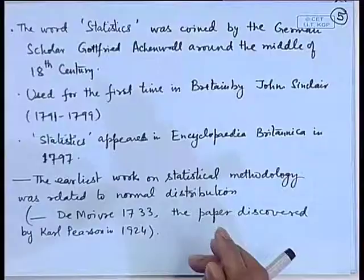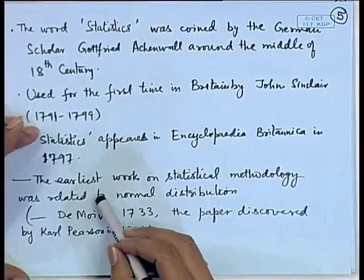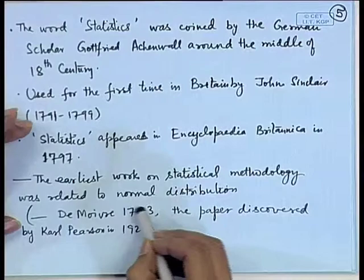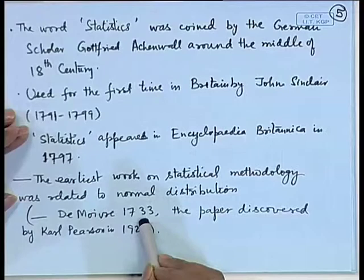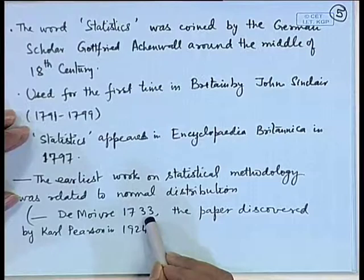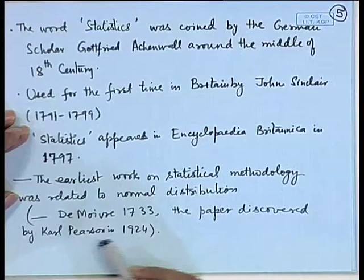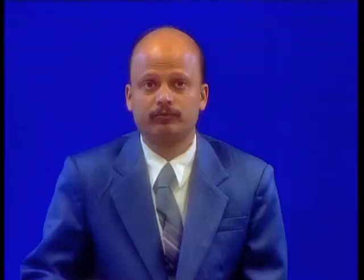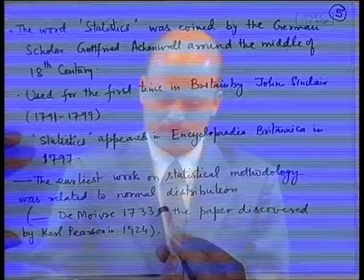The modern statistical methodology's earliest references are to the normal distribution, most probably by De Moivre. In 1733, he wrote a paper which appeared in an obscure journal, and therefore it was not known — it was later discovered in 1924 by British statistician Karl Pearson. Most probably for the first time, De Moivre gave what is known as the normal distribution, derived as arising in a large number of Bernoulli trials. He obtained it as a limit of certain sums of random variables — it is known as one of the first central limit theorems.